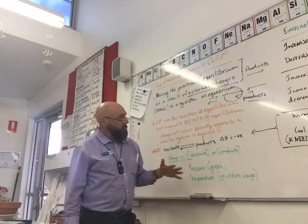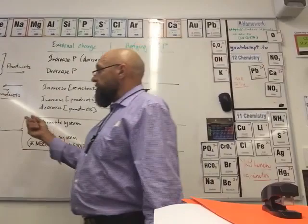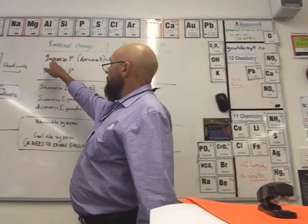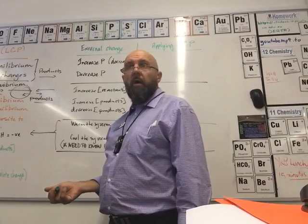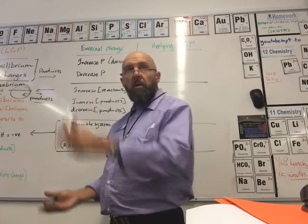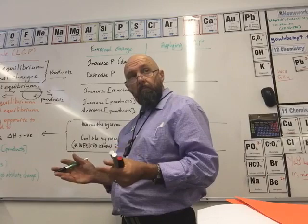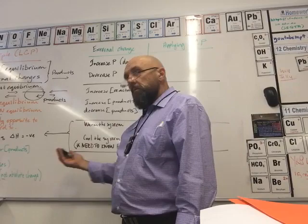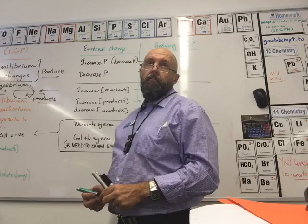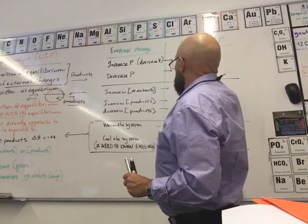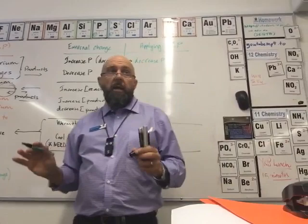Let's look at each one and see if we can apply them. All you have to remember is everything is opposite. So if I increase the pressure of a system that's at equilibrium, according to Le Chatelier's Principle, it's going to try and decrease the pressure to keep the Kc value constant. How would the system decrease pressure? It's going to try and decrease the pressure.